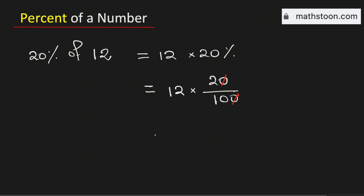Therefore this is equal to 2 times 12, which is 24 divided by 10, and this is equal to 2.4. Therefore 20% of 12 is equal to 2.4, and this is our final answer.